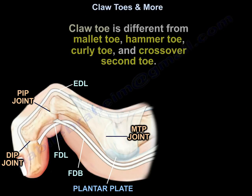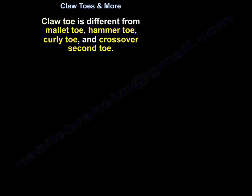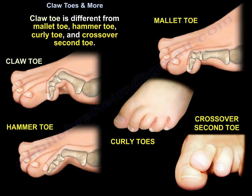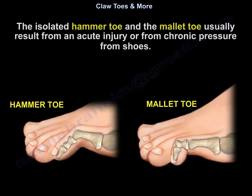The claw toe is different than the mallet toe, hammer toe, curly toe, and cross-over second toe. The isolated hammer toe and the mallet toe usually result from an acute injury or chronic pressure from shoes.